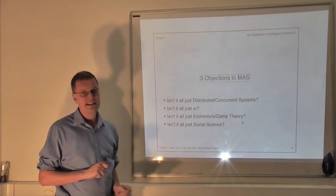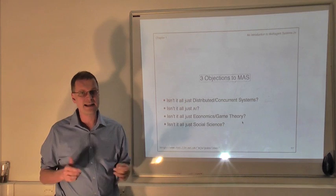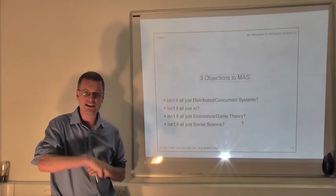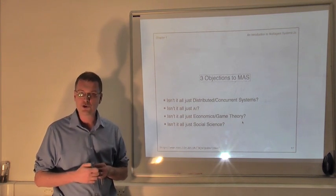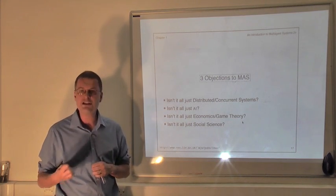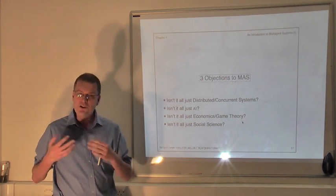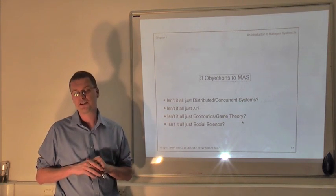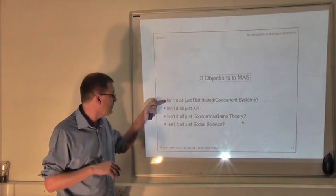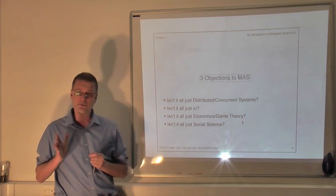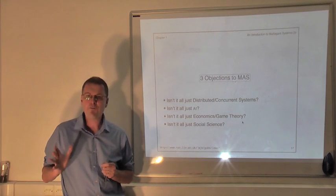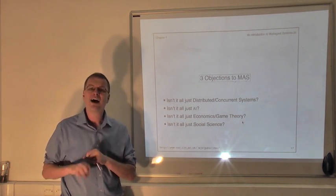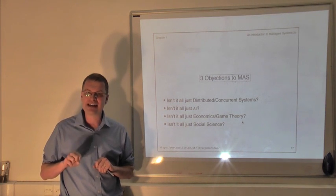Sniping happens because people are trying to get the best deal possible for themselves and acting strategically to get that deal. So in order to understand systems like eBay — and there are many such systems in the world today that have entities with their own goals and agenda, trying to achieve the best for themselves — you need to think about what those goals are and the strategic behaviour of the participants. In summary, multi-agent systems do share ideas with distributed and concurrent systems, but what's different is that we take into account the fact that the participants are self-interested, trying to get the best outcome for themselves.